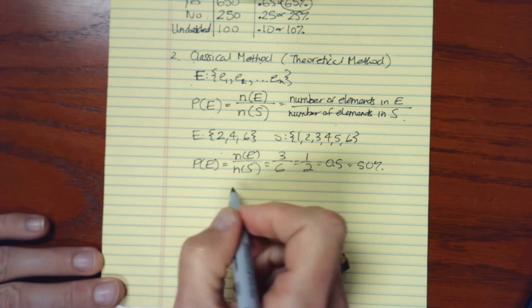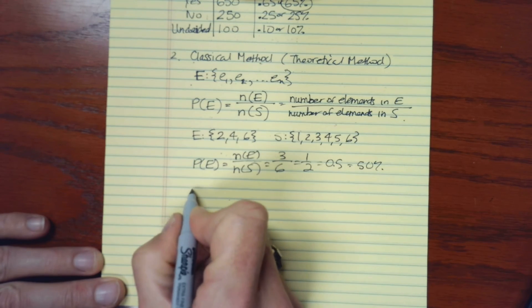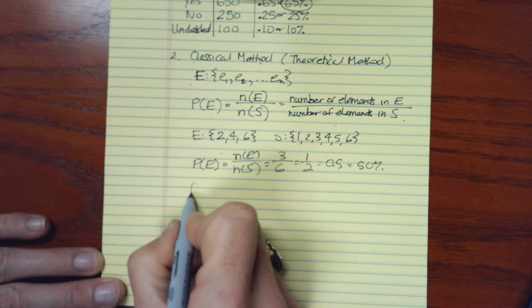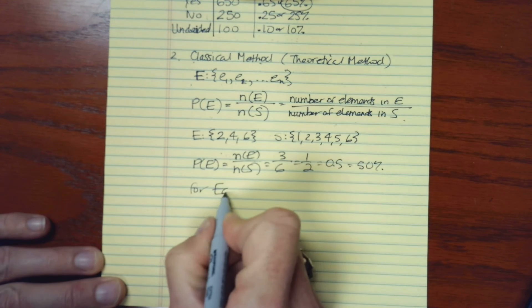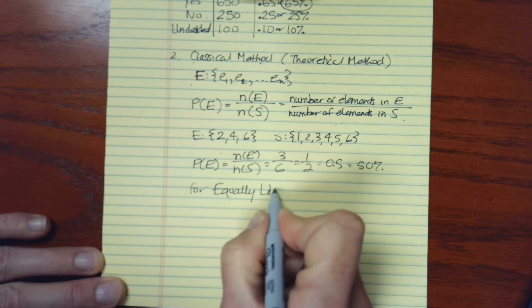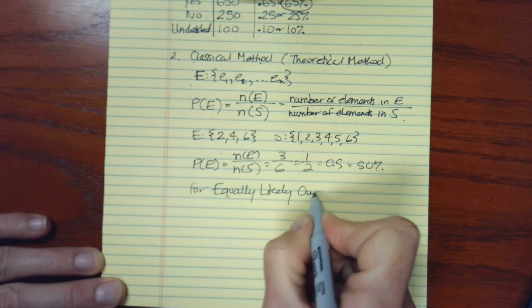So there is the classical method. Now, there is a restriction on the classical method. This is for equally likely outcomes.